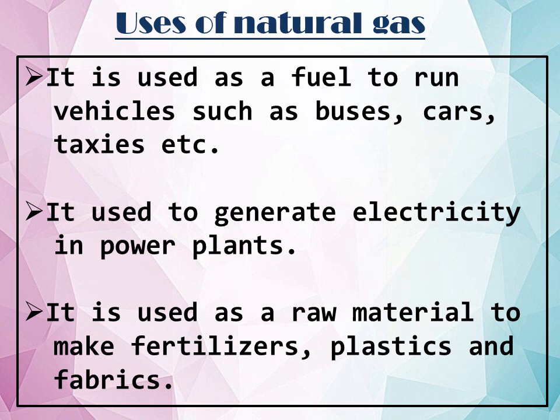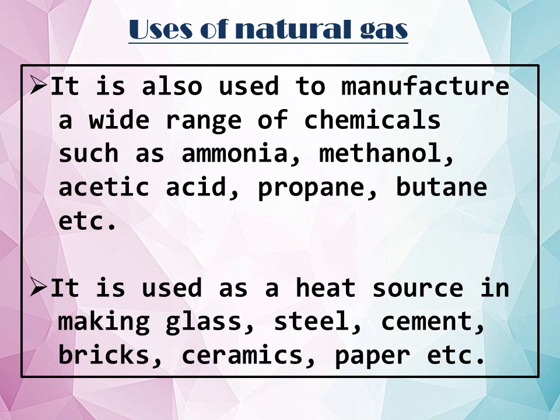Uses of natural gas: It is used as a fuel to run vehicles such as buses, cars and taxis. It is also used to generate electricity in power plants. It is used as a raw material to make fertilizers, plastics and fabrics. It is also used to manufacture a wide range of chemicals such as ammonia, methanol, acetic acid, propane and butane. Natural gas is also used as a heat source in making glass, steel, cement, bricks, ceramic and paper.